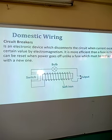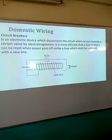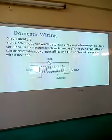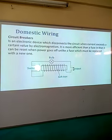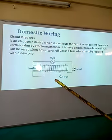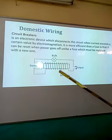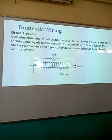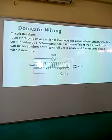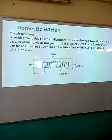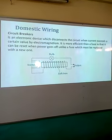We also have what we call the circuit breaker. The circuit breaker and the fuse perform almost similar functions. However, with the circuit breaker, it can be reused once the power comes back to normal, and it uses electromagnetism to cut off excess current in the circuit. This is how the circuit breaker looks — here is the switch, the bulb, and the output. We have a solenoid over a soft iron core, and this is what brings about the electromagnetic effect. The moment current exceeds the normal rating, the circuit breaker goes off. The advantage of the circuit breaker over the fuse is that it can be reused again once the current returns to normal.